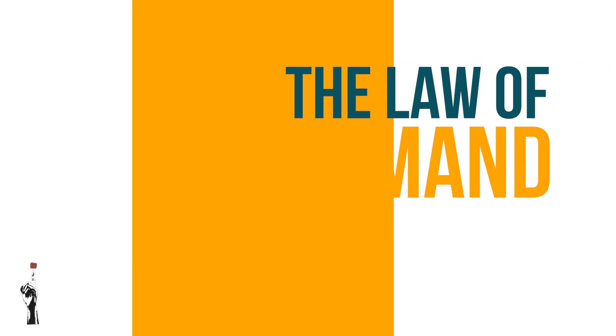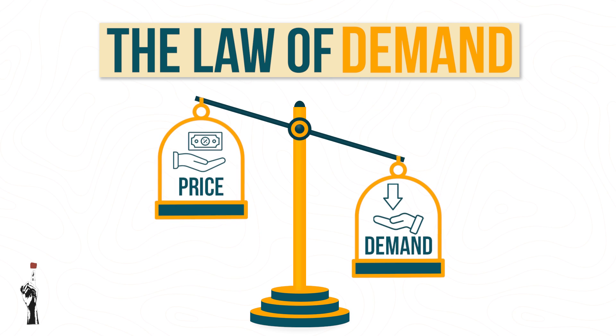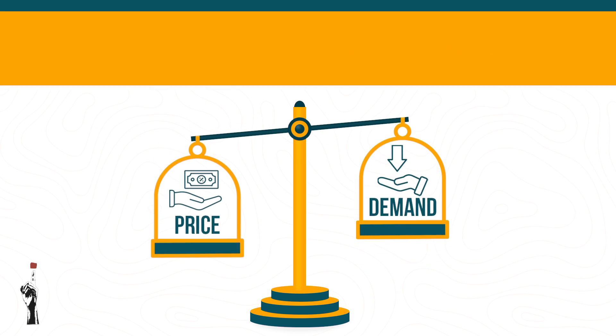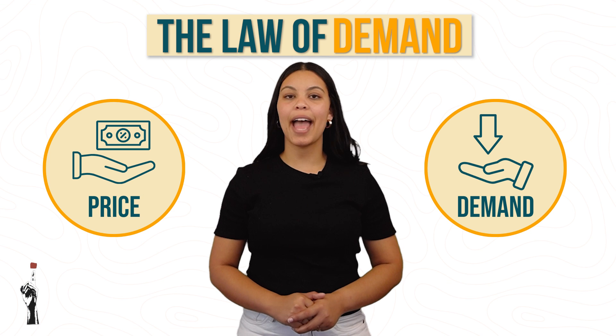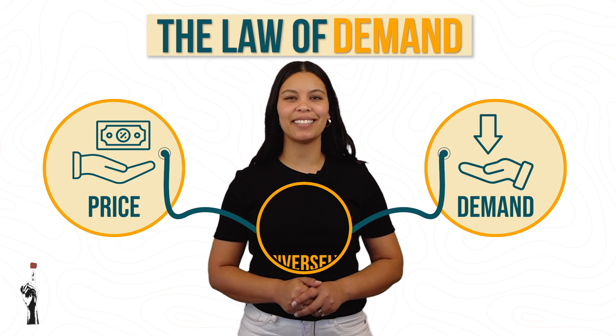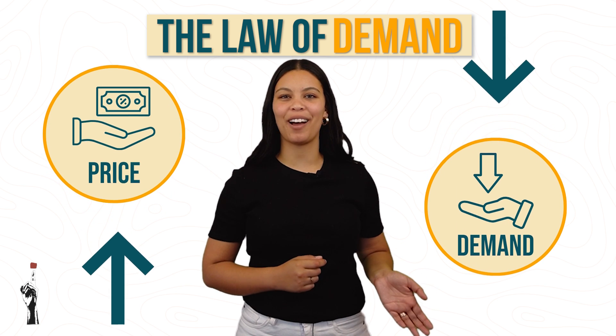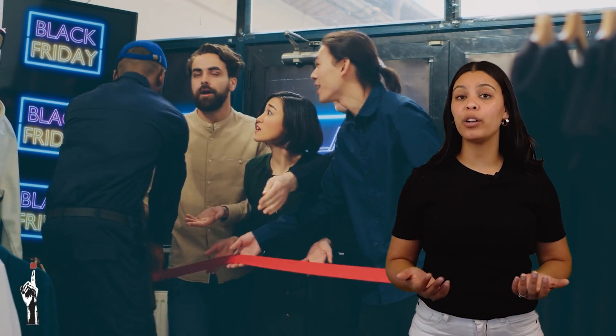Let's have a look at the law of demand. As the price of goods or services increases, consumer demand for the goods or service will decrease, and vice versa. The demand and price of goods or a service are inversely related, meaning if the one goes up, the other one will go down. There are multiple factors for why the demand for a product or service would change, other than a price fluctuation.